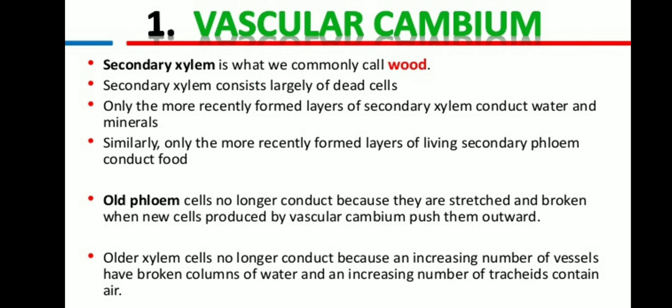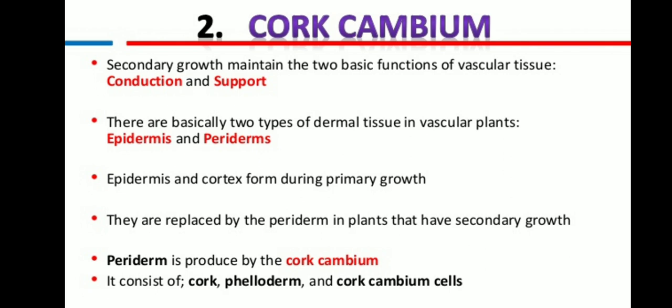When new cells are produced, they push out toward the outer side. Older xylem cells no longer conduct because an increasing number of vessels have broken columns of water and an increasing number of tracheids contain air cavities. The secondary growth maintains the two basic functions of vascular tissues: conduction and support. There are basically two types of dermal tissue in vascular plants: epidermis and peridermis. The epidermis and cortex form during primary growth and are replaced by the periderm after the formation of secondary growth. The periderm is the production of cork cambium.